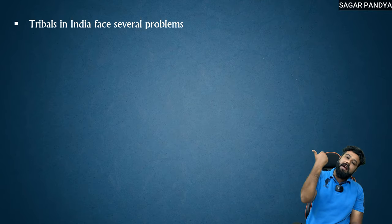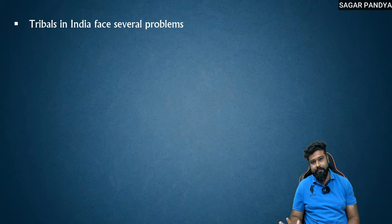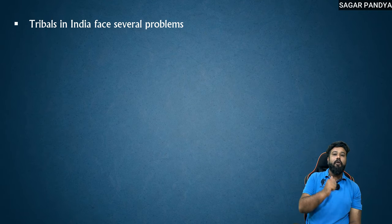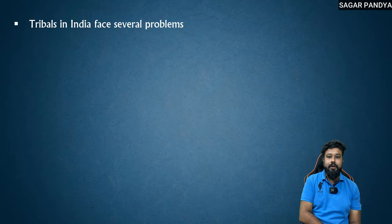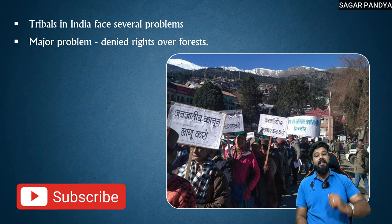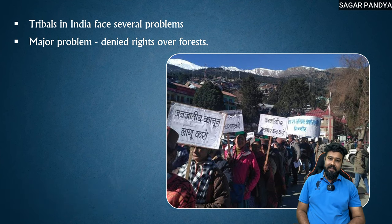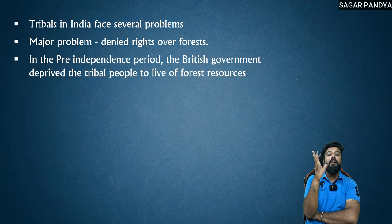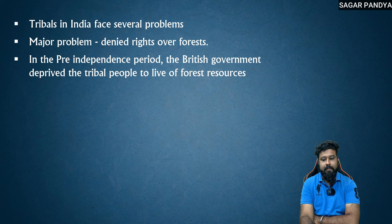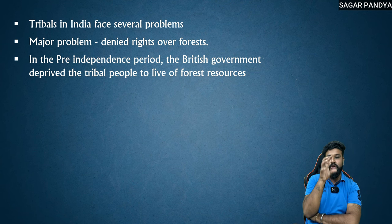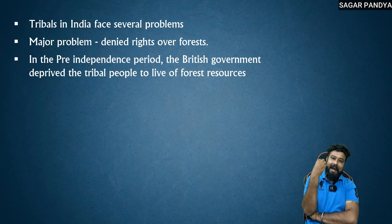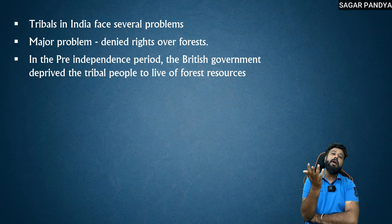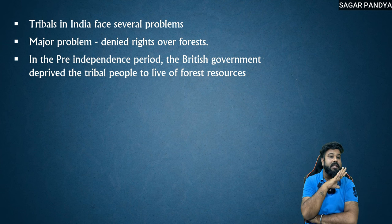Tribals in India have already faced a lot of several problems. For example, at the time India got independence, rights were not given to them. So on the basis of the Constitution, many rights were granted. The major problem that was denied was rights over the forest. In the pre-independence period, the British government even deprived tribal people from living off forest resources. Tribals were those who lived in the forest, and the things they got from the forest — by selling those things — their household ran.